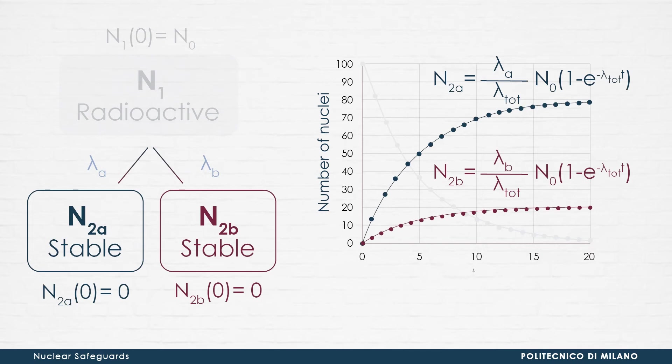Daughter nuclei N2A and N2B, on the other hand, will follow the evolution of N2 seen before, properly weighted by the ratio of lambda A or lambda B and lambda total, the so-called branching.